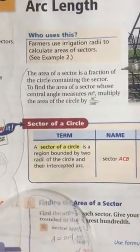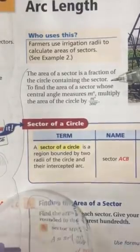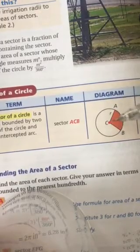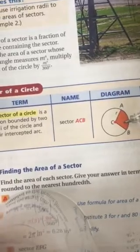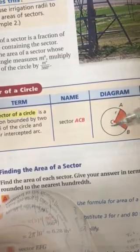The area of a sector is a fraction of the circle containing the sector. Let's look at that before we keep going. The area of a sector, so here's a sector, it's like a piece of the pie. The area of the sector is a fraction of the area of the circle containing the sector. Well, that makes sense. Of course the area of this is going to be a fraction of the area of the whole thing.